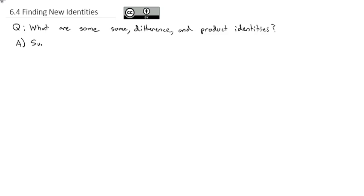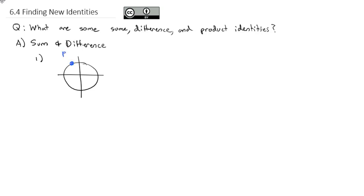The first identity we're going to call the sum and difference identities. To set these up, we're going to start with our unit circle. I'm going to put a point on it up here — we'll call that P — and a point over here we'll call Q. We'll call the big angle with P alpha, and the small angle with Q we'll call beta.